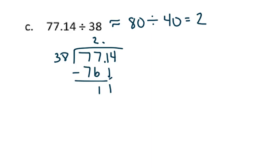I have 2 times 38, which gave me 76. The difference between 77 and 76 is 1. Now I'm on the right side of the decimal point, so I brought down my 1 tenth here to get 11.